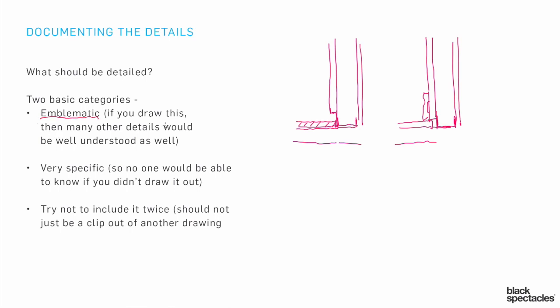So which details do you draw? There's an easy answer and then there are a lot of complicated answers. The easy answer is there are two basic ideas about which details you're going to draw on a set of drawings. The first is: is it emblematic? Something like what we just drew — if I drew that detail showing the little reveal, maybe a half-inch or three-quarter-inch reveal at the bottom of the wall system, and if I draw it in such a way that people could infer quite a number of other sets of relationships — well then, that's an emblematic detail. It's a spot where we're choosing an idea, not saying it's happening in just this one particular place.